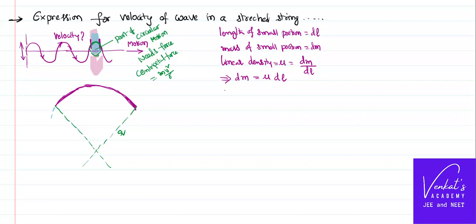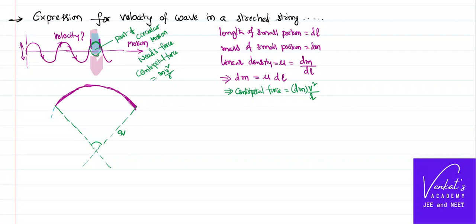Since this is a part of circular motion, the centripetal force can be written as DM·v² by R. As the part of the string is making a total angle theta, if I draw a vertical line from the center, that theta can be divided as theta by 2 and theta by 2 on each side. Now I want to identify who is providing this centripetal force in this situation.